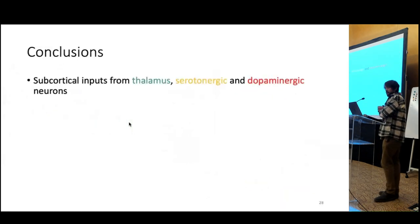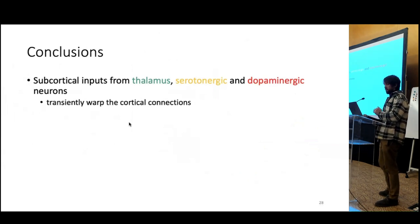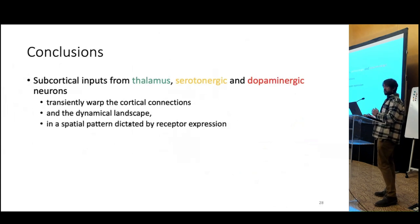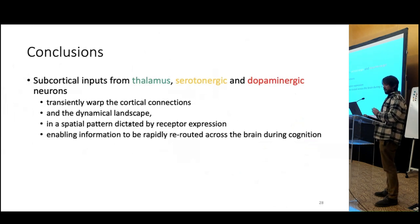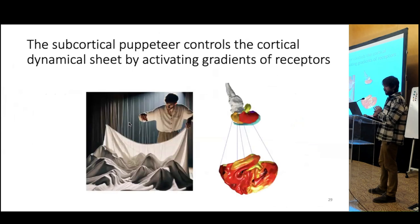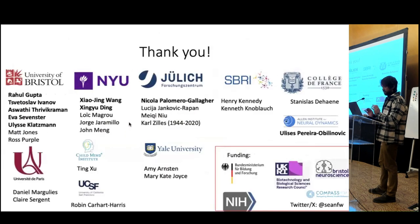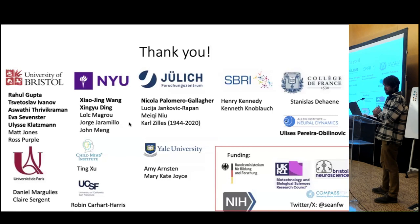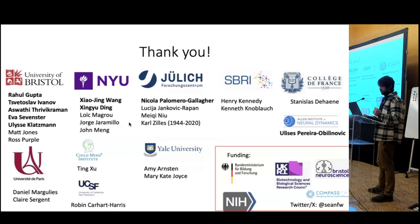To conclude, we think subcortical inputs from the matrix thalamus and from serotonergic and dopaminergic neurons transiently warp cortical connections and the dynamical landscape in a spatial pattern dictated by receptor expression, enabling information to be rapidly routed across the brain during cognition. To bring home the analogy: the subcortical puppeteer controls the cortical dynamical sheet by activating gradients of receptors. Thank you very much to my postdoc mentor Xiao-Jing Wang, collaborator Nicola Palomero-Gallagher, all the other collaborators, and the new group in Bristol.